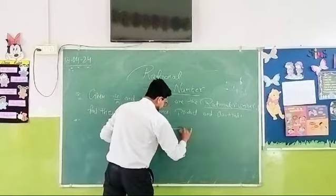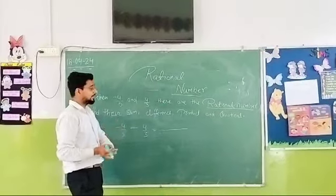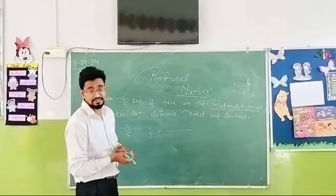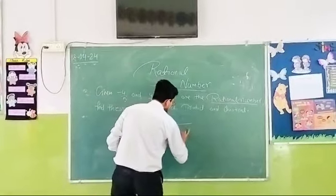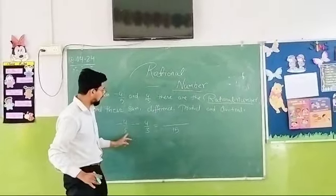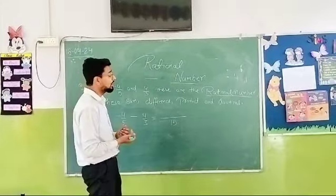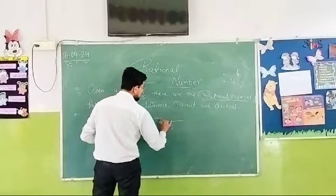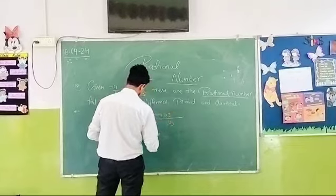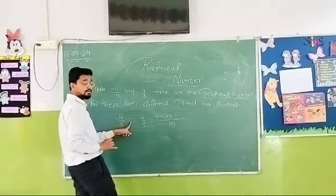So again, we will take the LCM and we know that in the previous question, what's the LCM of 5 and 3? That is 15. Then again, I will divide 15 by 5, so if we take like 5, 3 is 15. So I will multiply minus 4 with 3. Again, what is the operation here? That is minus.